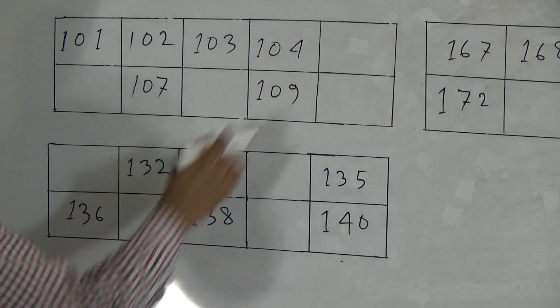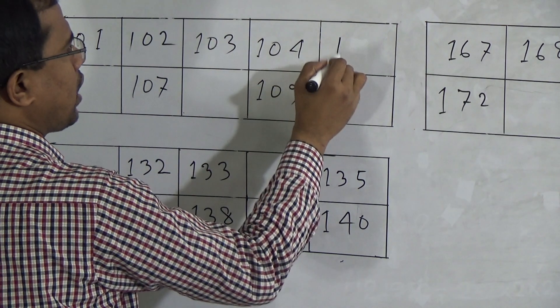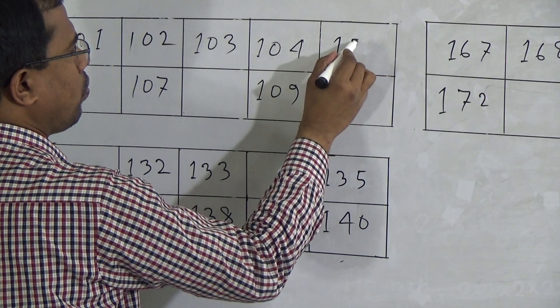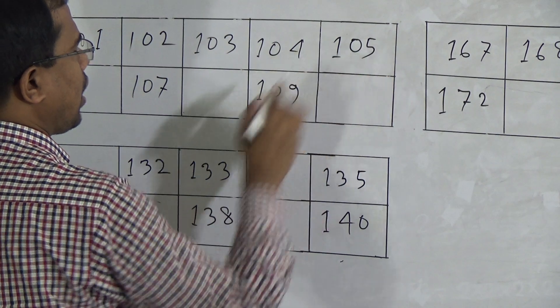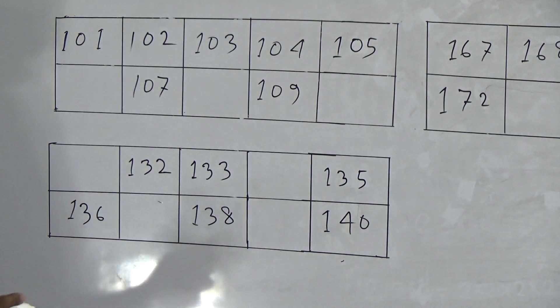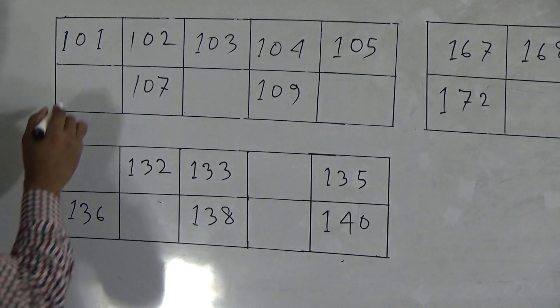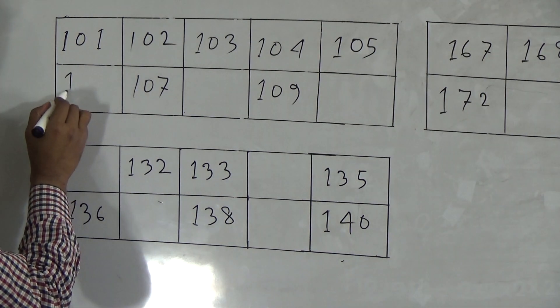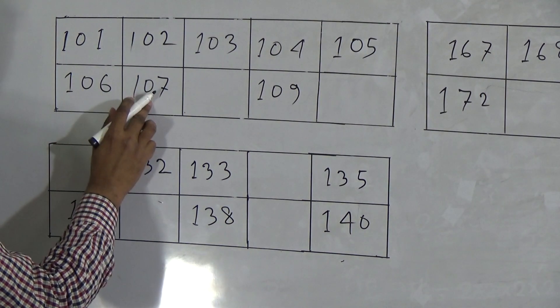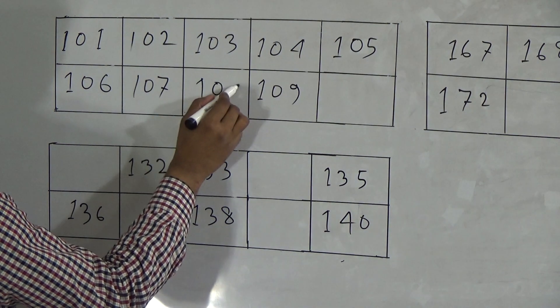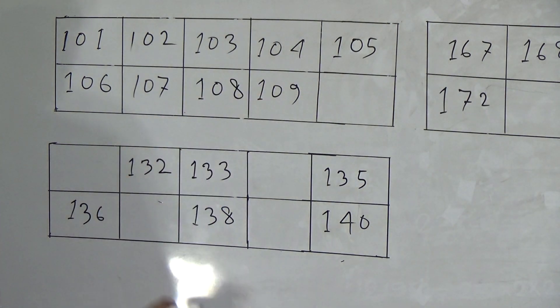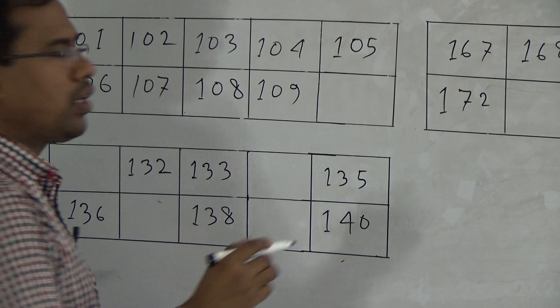Then 103, 104, then next number will be 105. After 105, you know that after 5, 6 will come. So, it will be 106. Very easy. Then 107, then 108. Then 109 given. Then last number will be 110.